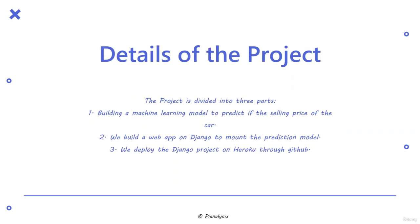The project is divided into three parts. The first part is building a machine learning model — specifically a random forest regression model — to predict the selling price of the car. Next, we will be building a web app on Django to mount this prediction model. And lastly, we will be deploying the Django project on Heroku through GitHub.